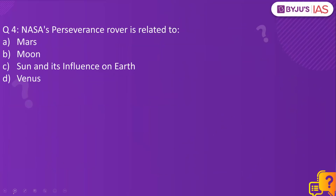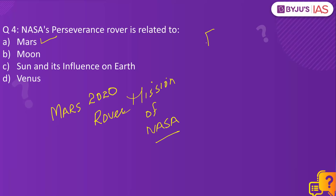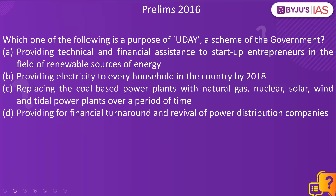Let's look at question number four. NASA's Perseverance rover is related to Mars, and it was in the news in February 2021. Now let's look at a previous year's question paper — Prelims 2016. Which one of the following is a purpose of UDAY, a scheme of the government? Pause this video and let me know the right answer. The right answer is D.